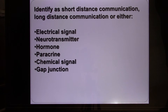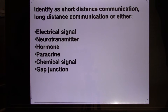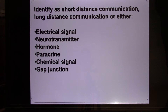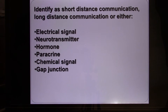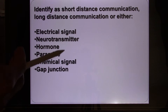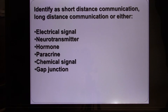Hormones are chemical signals released by endocrine cells. They need to be carried by blood, so it's long distance communication. Paracrine signals are chemical signals released by cells that, instead of traveling by blood, are just released locally. Their neighbor cells will pick up the chemical signal. In your digestive system, a lot of communication goes through paracrine signaling.